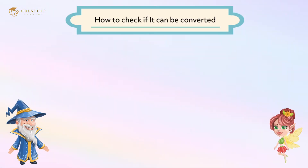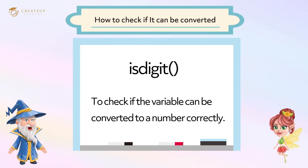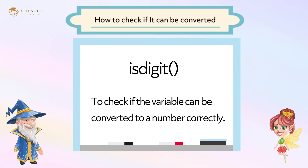How to check if a value can be converted. Can we check if we can convert in advance to avoid errors? We can prevent such errors by checking in advance when they are likely to occur. We can use the isdigit() function to check if a variable can be converted to a number correctly. True is displayed when conversion is possible, and false is displayed when conversion is not possible. If we check beforehand and convert only when true is displayed, there will be no error.